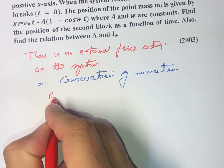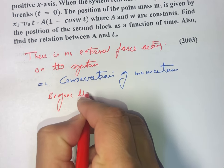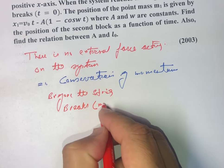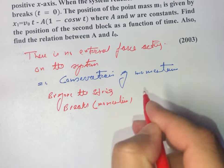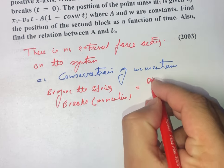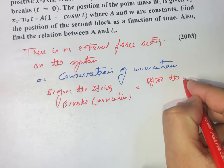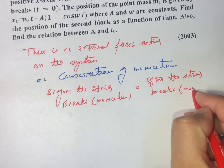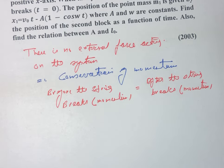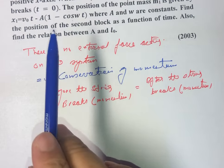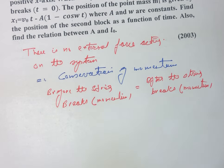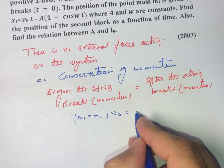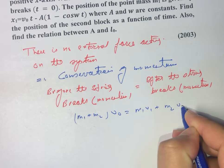Before the string breaks, the masses m1 and m2 are traveling with the same velocity v0. So by conservation of momentum we can write: (m1 + m2)·v0 = m1·v1 + m2·v2, where m1 is moving with velocity v1 and m2 is moving with velocity v2.